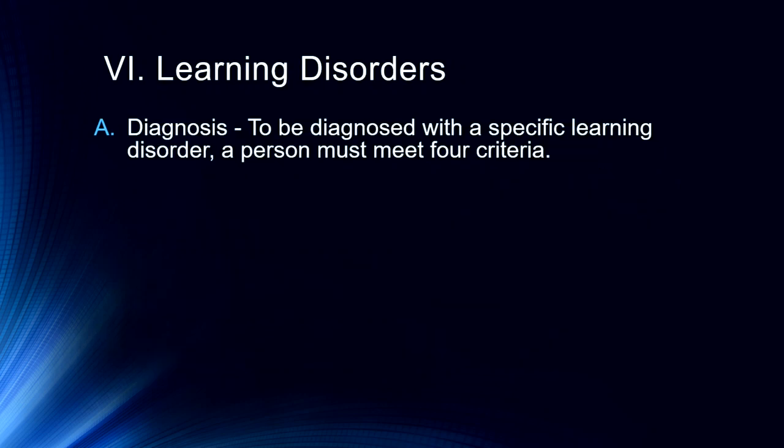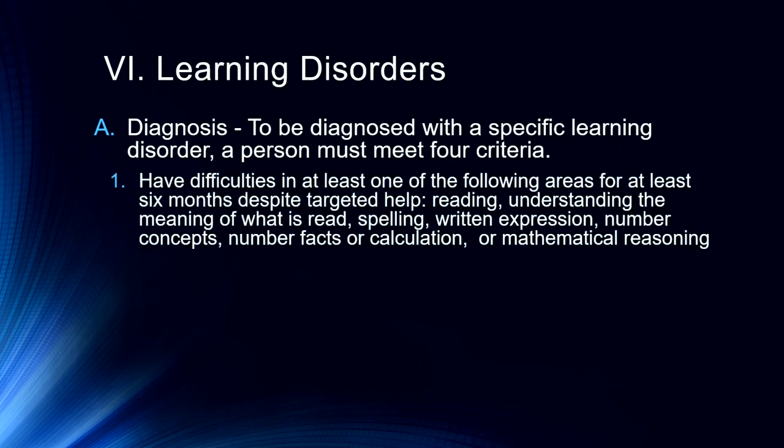That gets us to learning disorders. To be diagnosed under the DSM with a specific learning disorder, an individual has to meet four criteria. First, they have to have difficulties in at least one of the following areas for at least six months despite targeted help: reading, reading comprehension, spelling, written expression, number concepts, number facts or calculation, or mathematical reasoning. One important thing to note is that an individual cannot simply be weak in one of these areas and necessarily have a learning disorder.